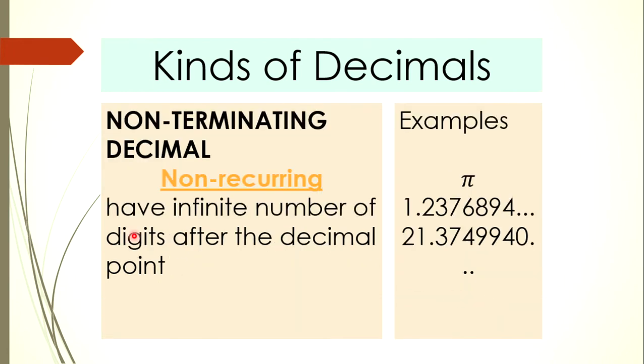Another one is what we call the non-terminating decimal. Under non-terminating decimals, we have two types. The first one is what we call the non-recurring, non-terminating decimal, meaning it has an infinite number of digits after the decimal point.